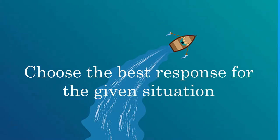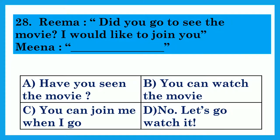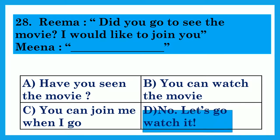Choose the best response for the given situation. Prima: Did you go to see the movie? I would like to join you. Meena: Dash. Option A: Have you seen the movie? Option B: You can watch the movie. Option C: You can join me when I go. Option D: No, let's go watch it. The answer is Option D: No, let's go watch it.